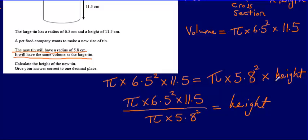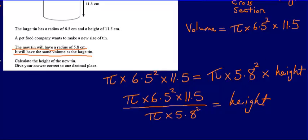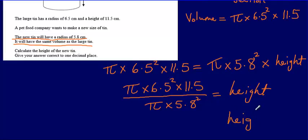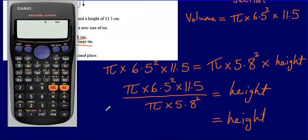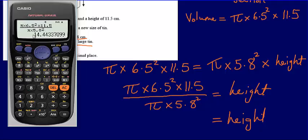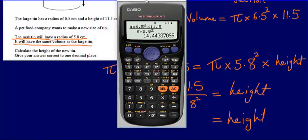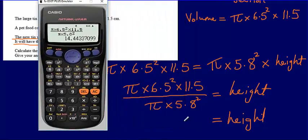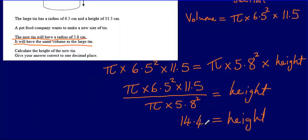It's a nice easy equation we've set up, solved by dividing by π × 5.8². All that's left is to input this into a calculator: π × 6.5² × 11.5, divided by π × 5.8². That gives a final answer of 14.4, correct to one decimal place. So the height of the new tin is 14.4 centimetres.